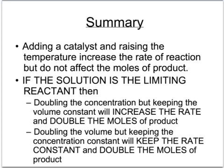If you doubled the volume but kept the concentration constant, the rate would be pretty much the same because you're using the same concentration of acid. However, because you've got twice the volume you've got twice the number of moles, and therefore twice the number of moles of reactant gives you twice the number of moles of product — so you'd get double the volume of hydrogen.